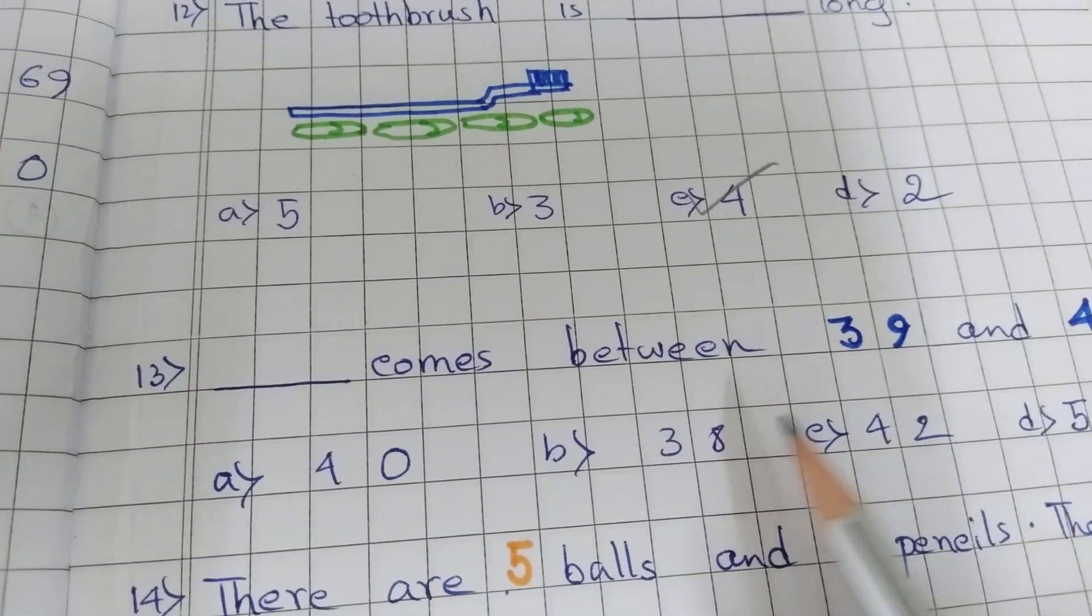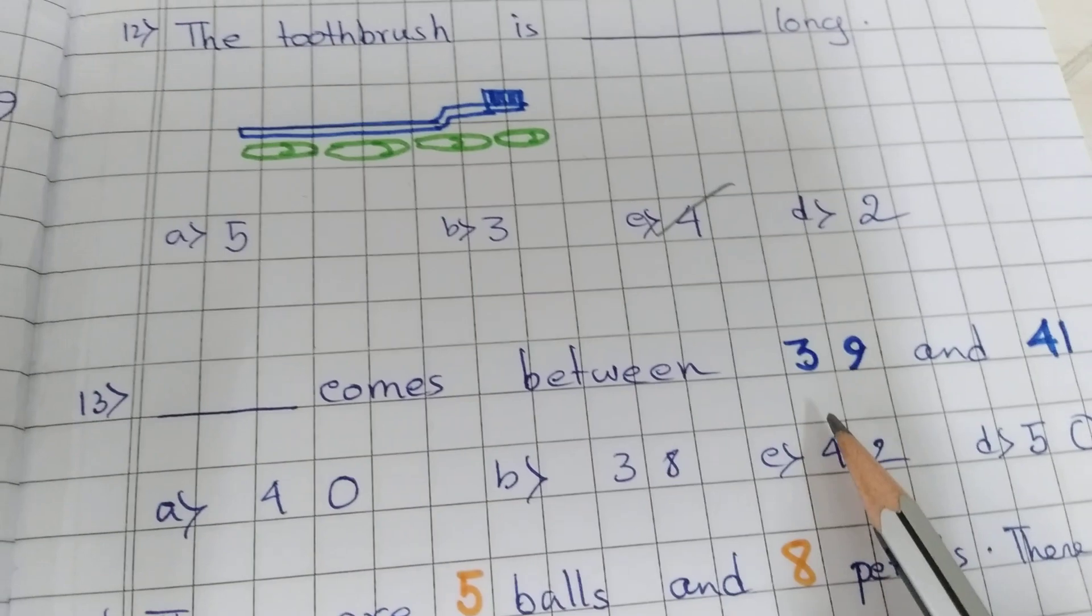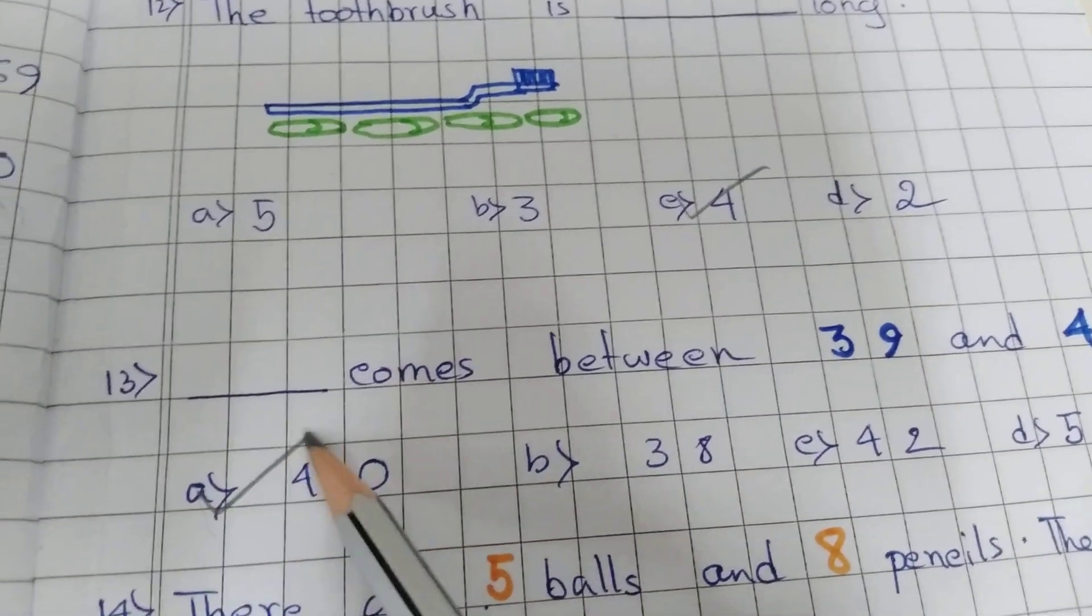Dash comes between 39 and 41. 39, 40, 41. So option A is correct.